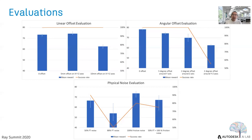RD2 can solve partially observable assembly tasks that other state-of-the-art algorithms cannot, and it adapts well in different simulations with different physical conditions or different initial poses.